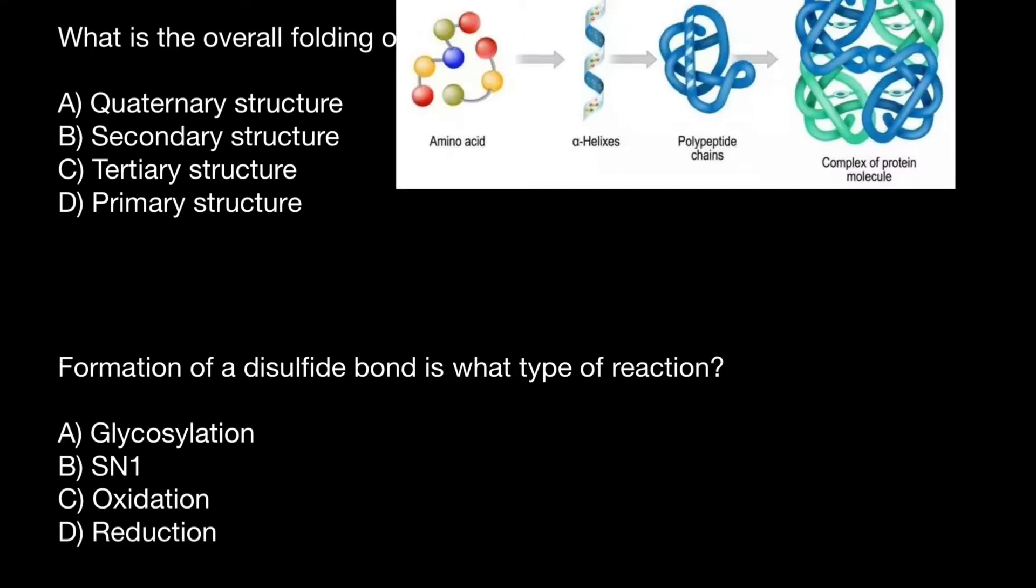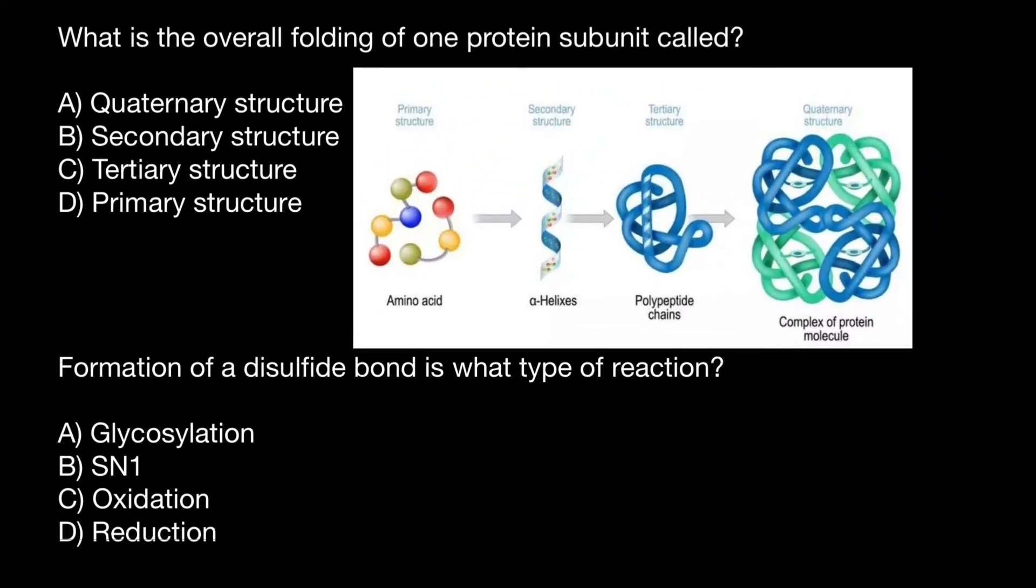Take a look at this picture which represents four structures that a polypeptide chain can fold into. The first is the primary structure, which is basically the sequence of amino acids.